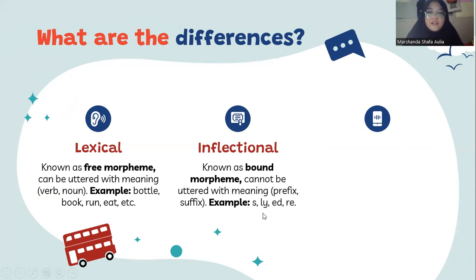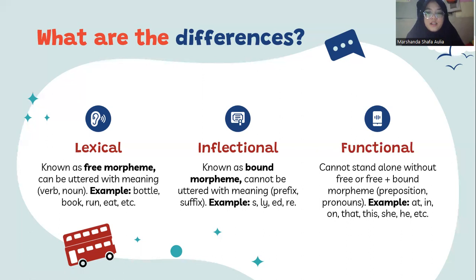Examples of inflectional morphemes include prefixes like 're-' and others. Then we have the functional morpheme, which cannot stand alone without a free morpheme or a free plus bound morpheme. It includes prepositions and pronouns — for example: at, in, on, that, this, she, he, it, and so on.